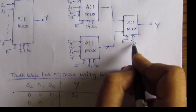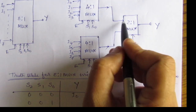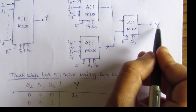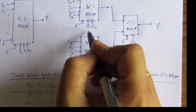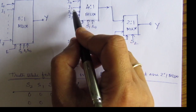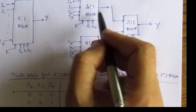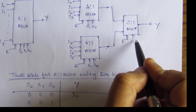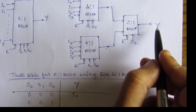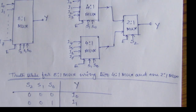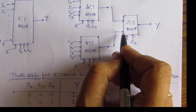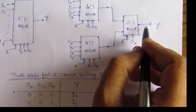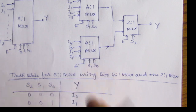Similarly, when S2 equals 0 and this upper port is still selected, with S1 equals 0 and S0 equals 1, input I1 is directed to the output port. So we get Y equal to I1. When S2 equals 1, the output of the lower 4-to-1 multiplexer is directed to the input of the 2-to-1 multiplexer and then to output Y.